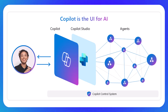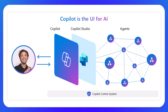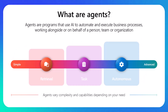It might be your time-off agent to book some time off. It might be HR policies or onboarding, all experienced through the context of Copilot. And underlying that is our Copilot control system to make sure you have the right security, the right controls, and the right analytics and oversight to know how they're performing. So, what are agents? At the highest level, they are AI programs that help you automate and execute business processes.